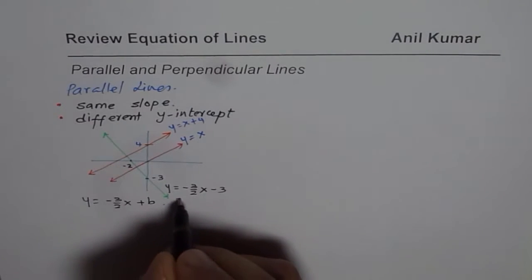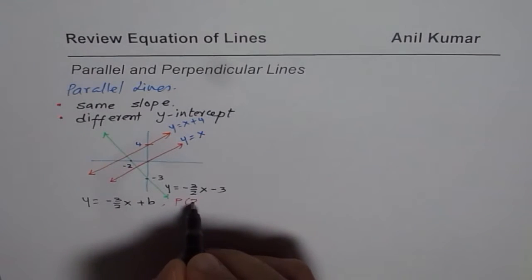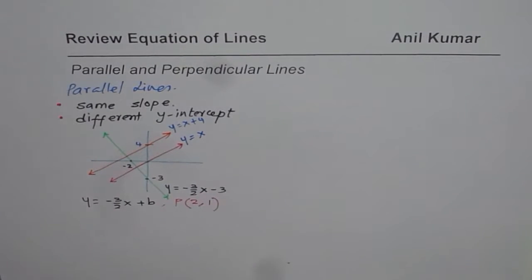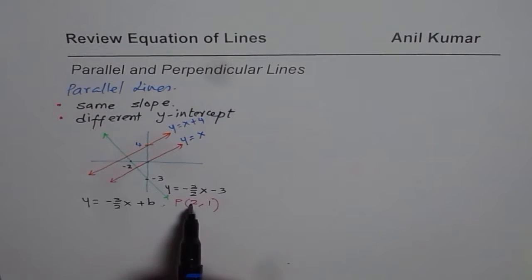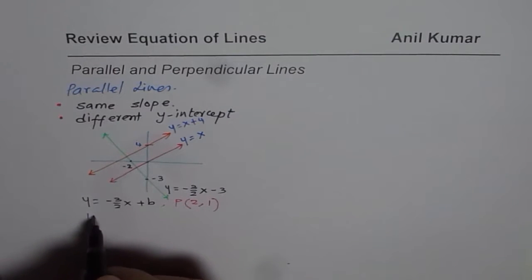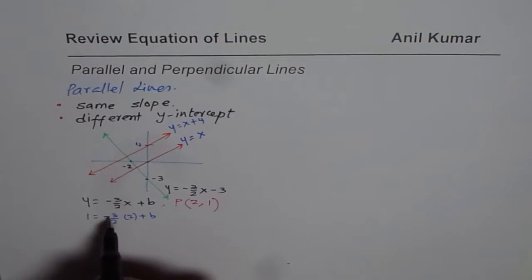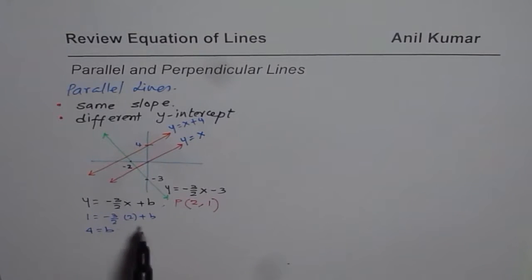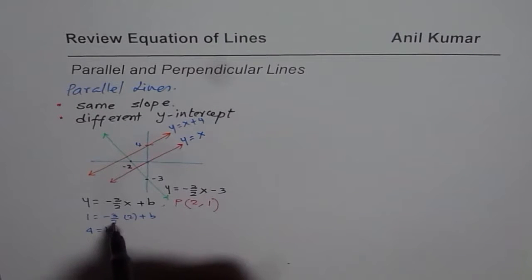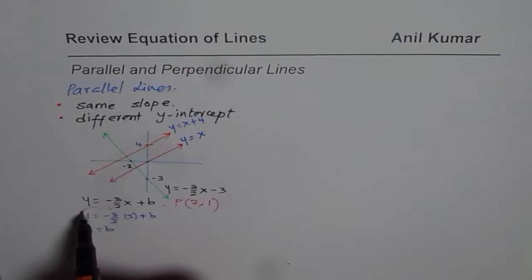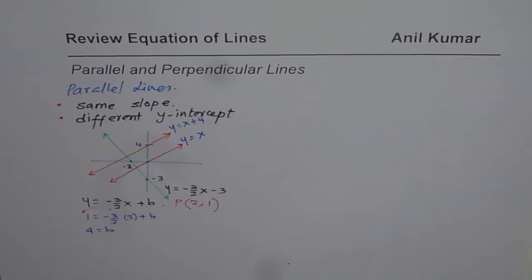Let's say the parallel line goes through point P at (2, 1). We'll replace x with 2 and y with 1 to find the y-intercept. So we have 1 equals minus 3 over 2 times 2 plus P. The 2s cancel, giving us 1 equals minus 3 plus P, so P equals 4. Three times 2 is 6, divided by 2 is 3; taking minus 3 to this side gives 1 plus 3 equals 4.